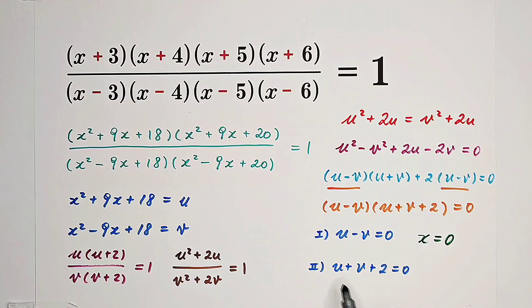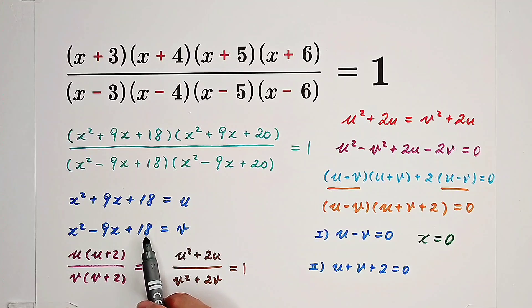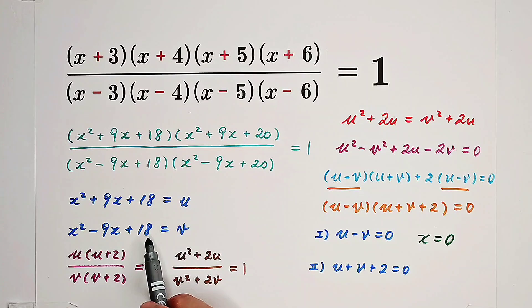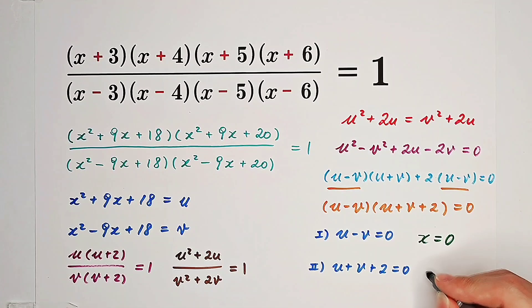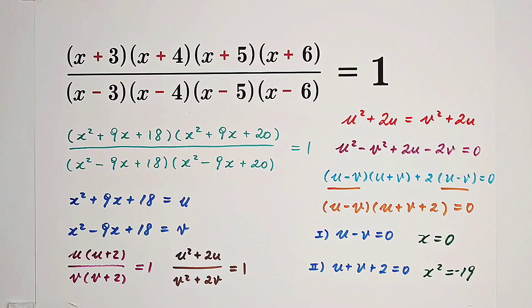In our second case, u plus v plus 2 is 2x squared plus 38. So x squared will be negative 19. In this case, we don't acquire any real roots, but imaginary roots.